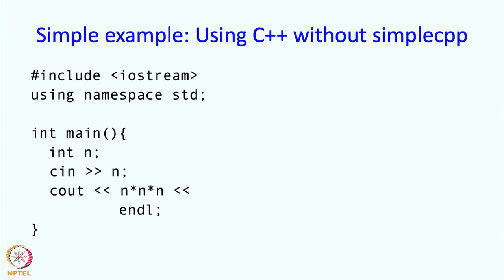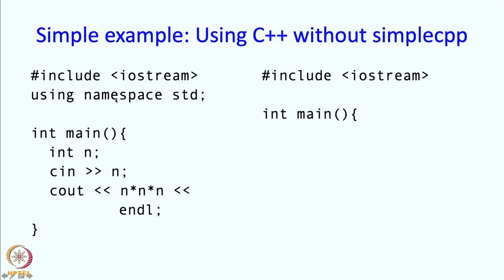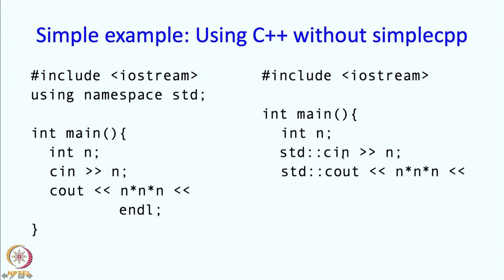Because simple.cpp was including these things, and because you need to use cin and endl, you need to have these lines. Here is another way of writing the same thing: include iostream, int main, int n — and now because you did not write 'using namespace std', you will have to write 'std::cin' instead of just cin, and likewise 'std::cout' and even 'std::endl'. And if you need math functions, you would also need '#include <cmath>'.